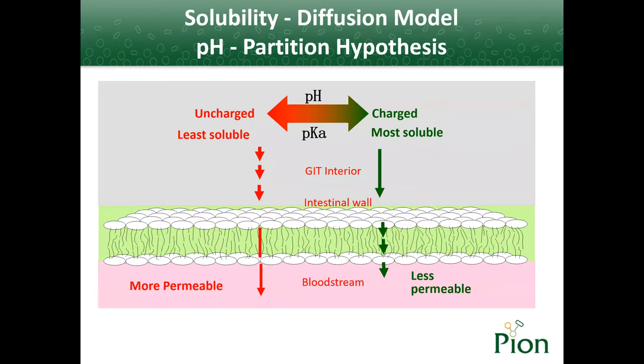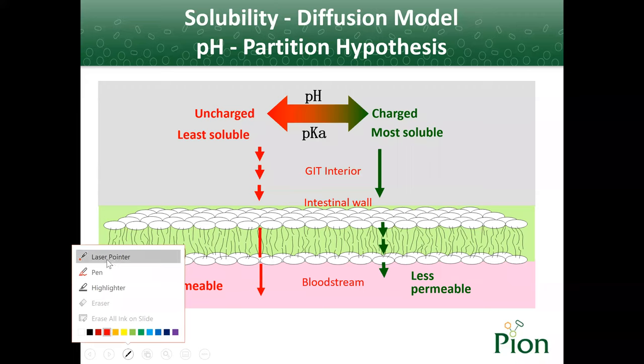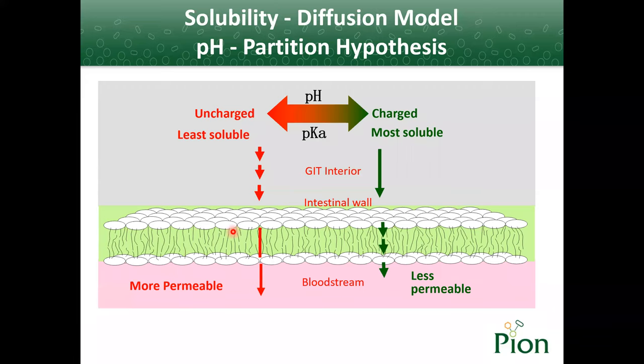As we know, when a compound is uncharged it is least soluble but more permeable through the intestinal wall. And when it becomes fully charged, it becomes most soluble but less permeable. For example, acidic compounds have low solubility and high permeability in acidic environment, and basic compounds have high solubility and low permeability in acidic environment due to the different ionization profile.